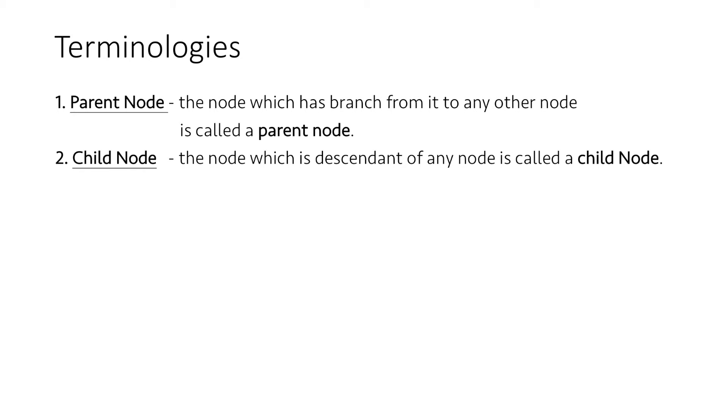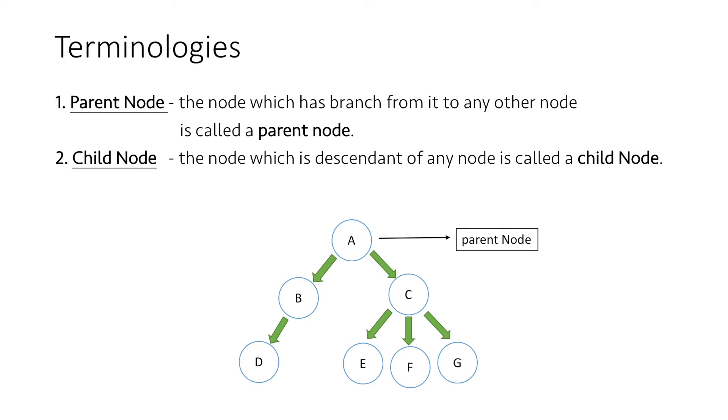Let us understand this by taking an example. If we choose node A as the parent node, then nodes B and C are descendants of node A. So node B and node C are the child nodes of A.